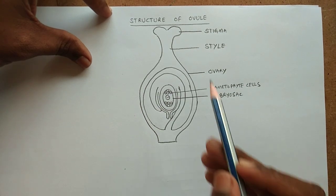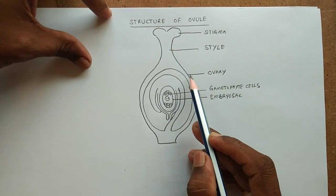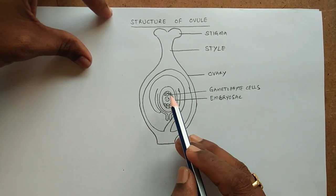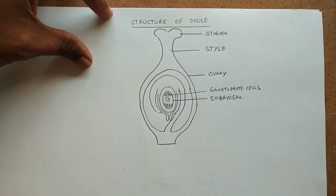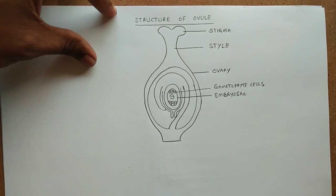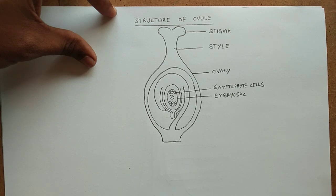Now labeling is completed. It is stigma, it is style, it is ovary. These are gametophyte cells and this is the embryo sac. With this, the labeling is completed and the diagram is also completed. Thank you for watching. Hope you understand how to draw this diagram.